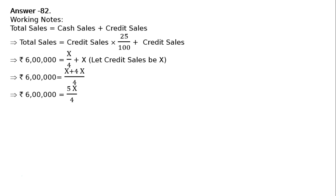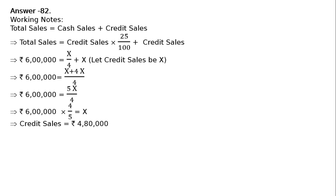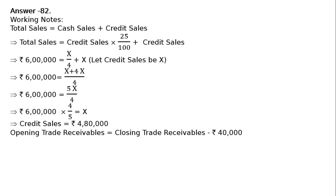Solving: 5x/4 = ₹6 lakhs, so x = ₹6 lakhs × 4/5. Therefore, credit sales (x) = ₹4,80,000.